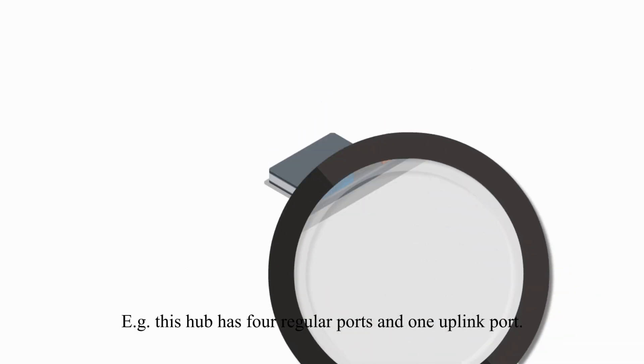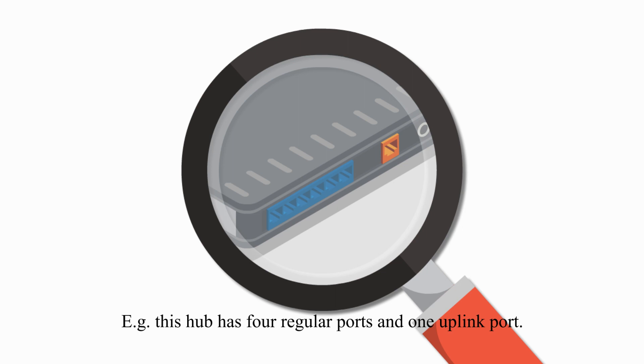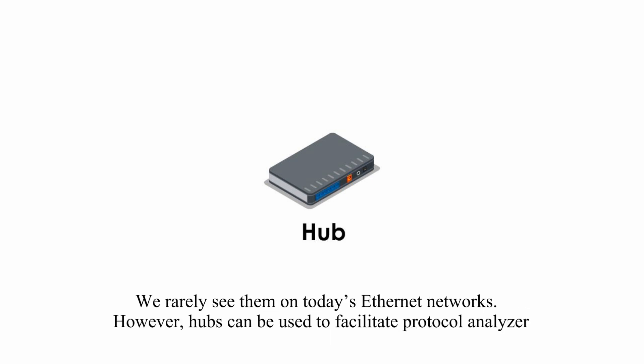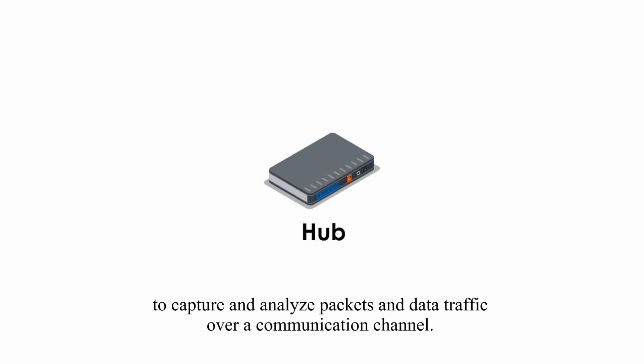For example, this hub has four regular ports and one uplink port. Keep in mind, hubs are typically used in early Ethernet networks, such as 10Base-5 or Thicknet, or 10Base-2 or Thinnet. We rarely see them on today's Ethernet networks. However, hubs can be used to facilitate a protocol analyzer to capture and analyze packets and data traffic over a communication channel.